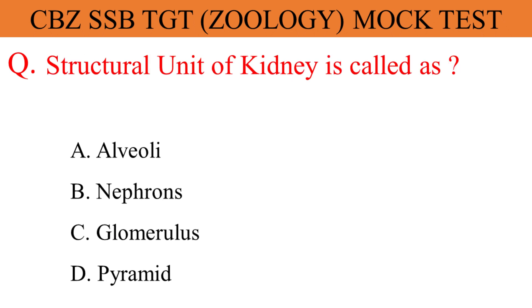The structural unit of kidney is called: The given options are A. Alveoli, B. Nephrons, C. Glomerulus, D. Pyramid. And the correct answer is option B. Nephrons.